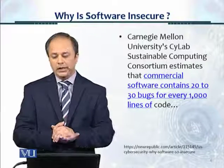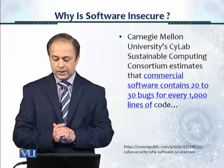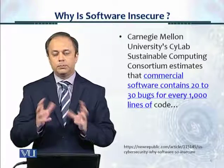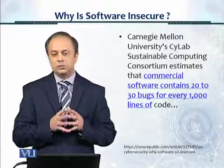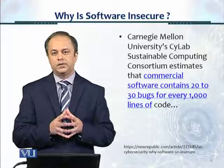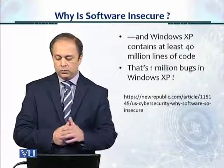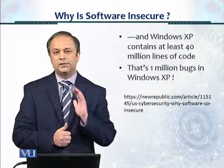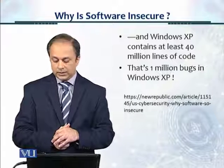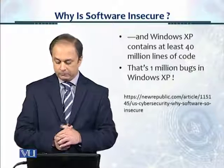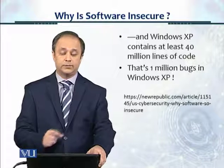Carnegie Mellon University's Scilab Sustainable Computing Consortium estimates that the ballpark average is that commercial software contains 20 to 30 bugs or defects for every 1,000 lines of code. Windows XP contains at least 40 million lines of code, and if you do the math, that's about 1 million bugs in Windows XP. You can see the reference and get further details from the reference shown on the screen.